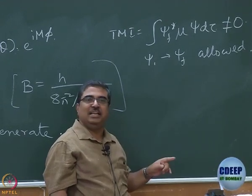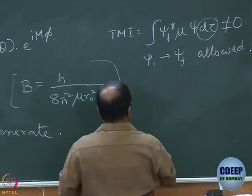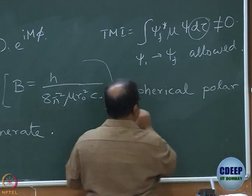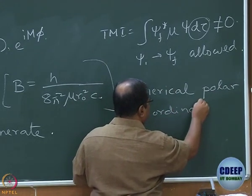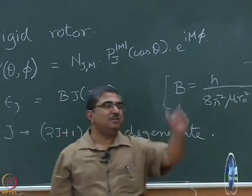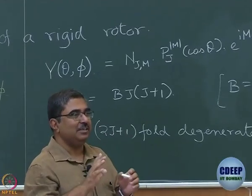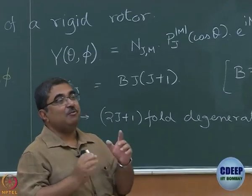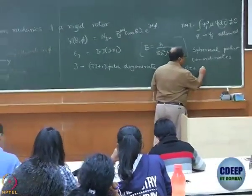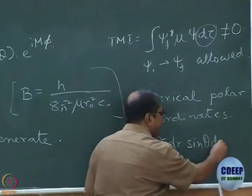Before we start working out the selection rule for rigid rotor, two more things need to be remembered. First is what is d tau for spherical polar coordinates. If I am working with X, Y, Z Cartesian coordinates, then I know very well that this d tau or dV is dX into dY into dZ. If I am working with R theta phi, what is this d tau? R square dR then sine theta d theta d phi. Excellent.